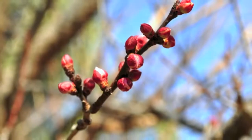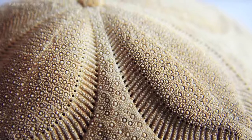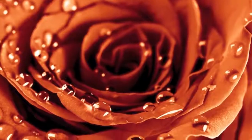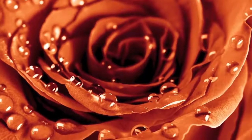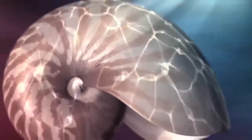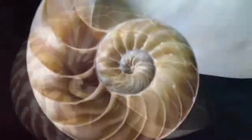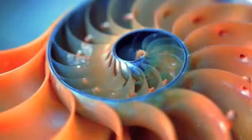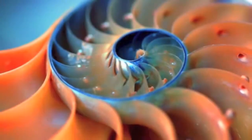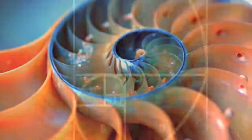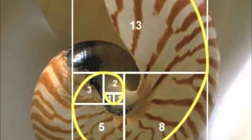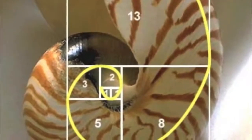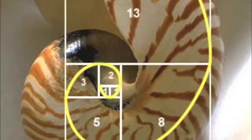Buds on trees, sand dollars, starfish, petals on flowers, and especially the nautilus shell are formed with this exact same blueprint. With each segment of growth, the nautilus adds to itself one more value on Fibonacci's scale.